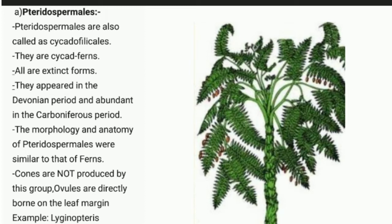The leaf structure of Pteridospermales is similar to fern plants, and the ovules can be seen directly on the leaves, shown here in red.